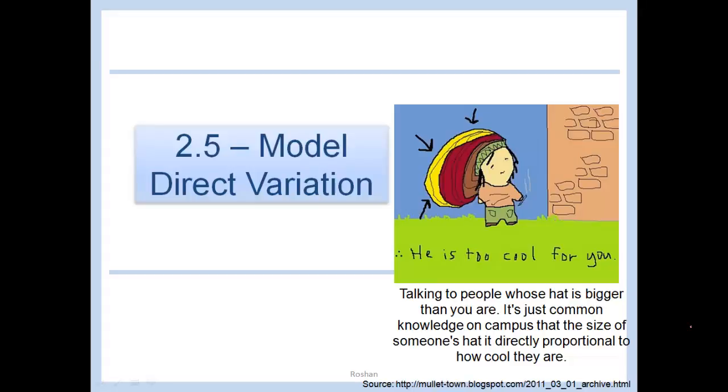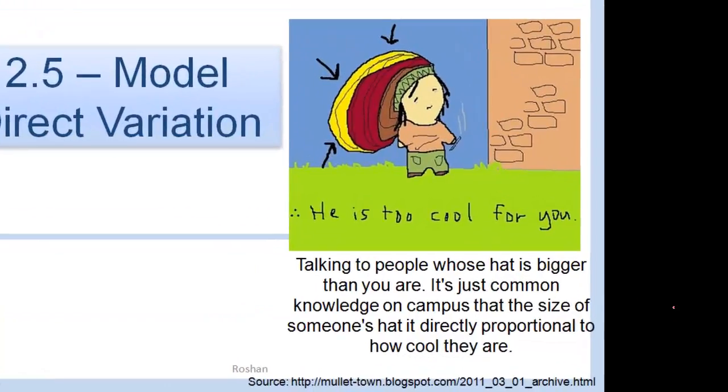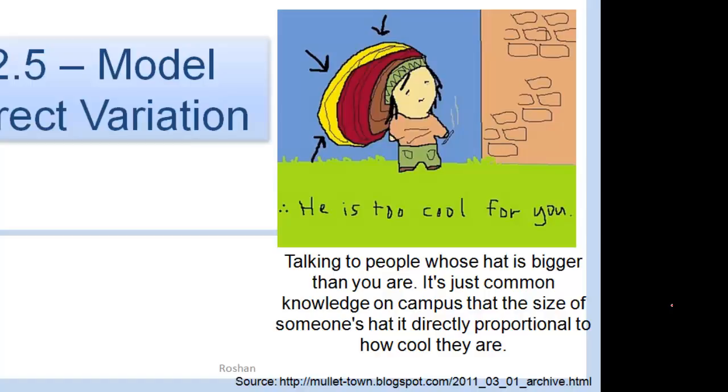2.5 Model Direct Variation. Talking to people whose hat is bigger than you are. It's just common knowledge on campus that the size of someone's hat is directly proportional to how cool they are. Therefore, he is too cool for you. And this little sign right here is therefore, those three little dots. I use it all the time.